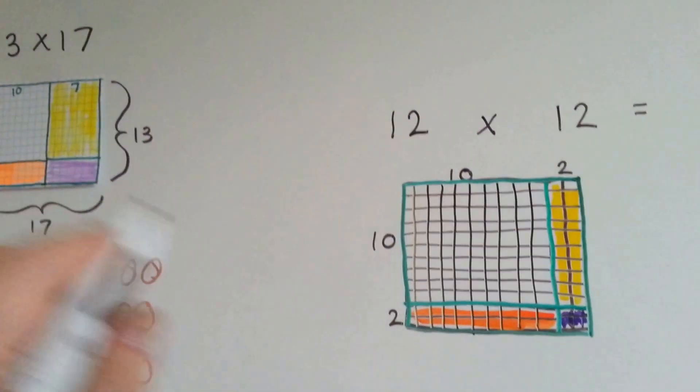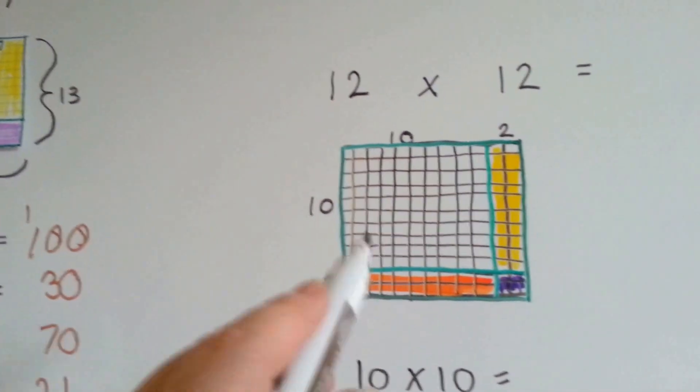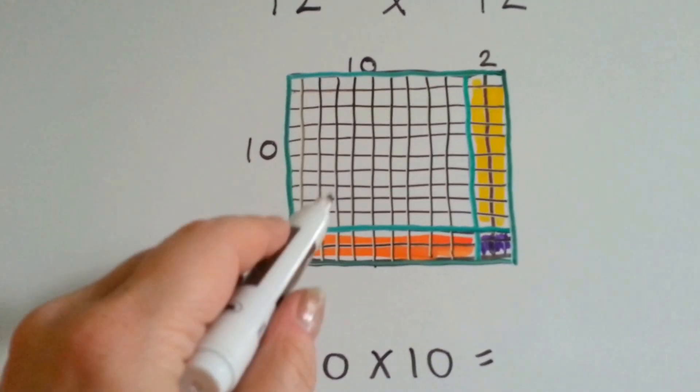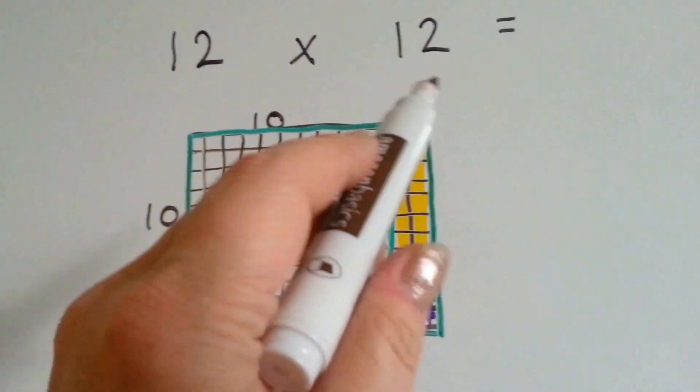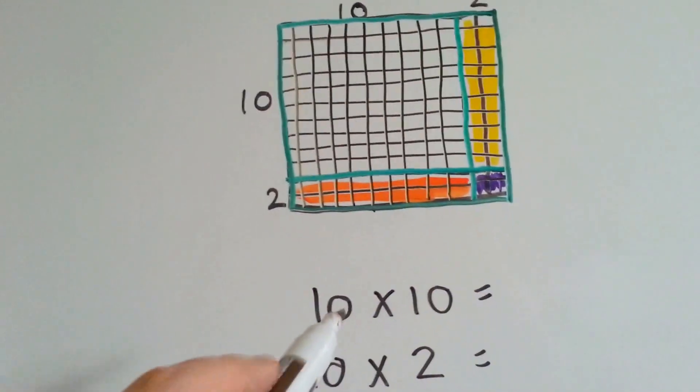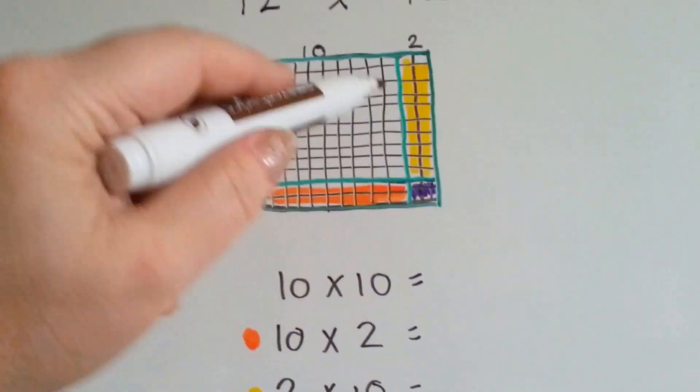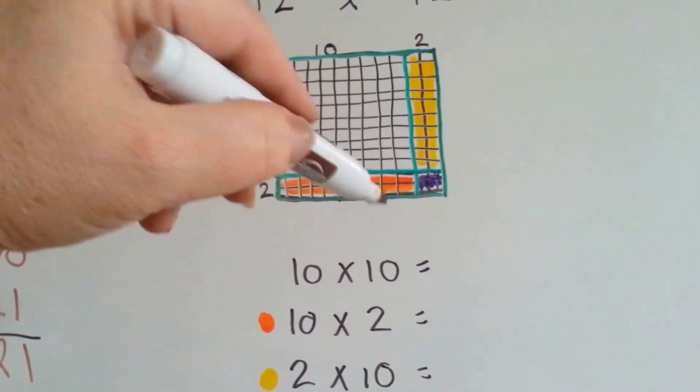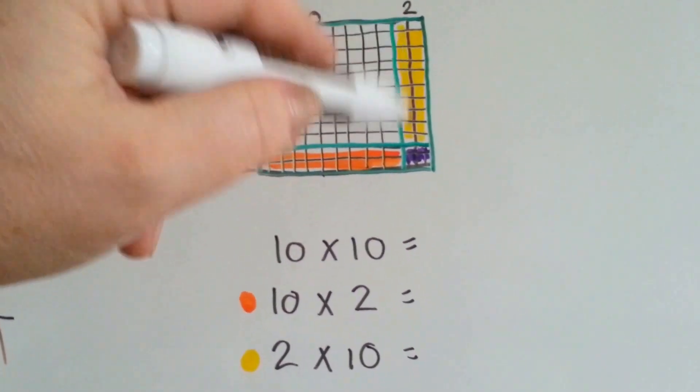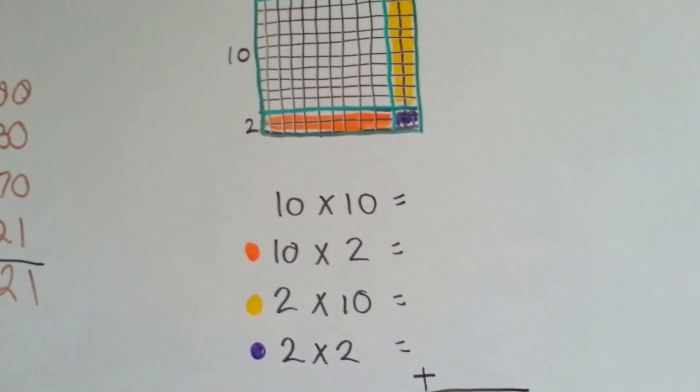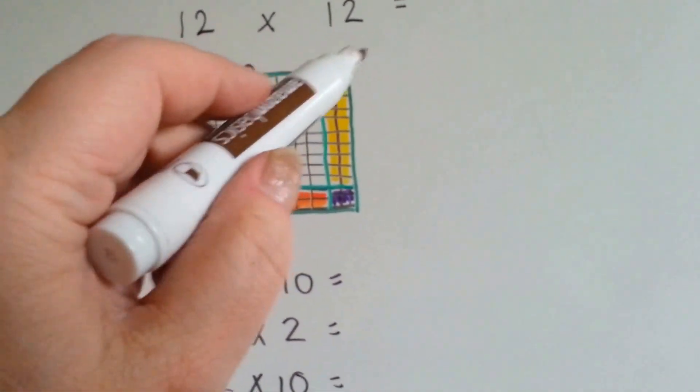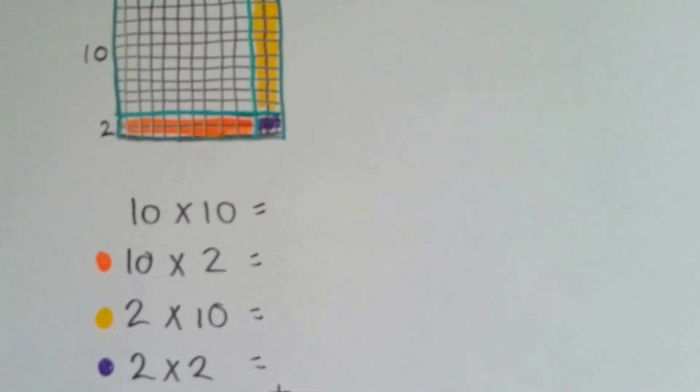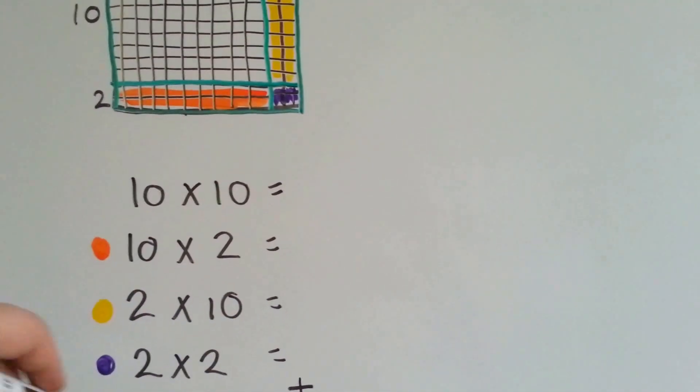Now this one I made by hand. I didn't want to use graph paper to show you that you don't need the graph paper. The squares don't have to be perfect. They just have to be there. So, now we've got 12 times 12. So, we've got our 10 times 10. We've got a 10 times 2, which is the orange one here. We've got a 2 times 10, which is the yellow one here. And we've got a 2 times 2, which is the purple one. And all together that makes 12 times 12. There's 12 this way and 12 that way. So, it's all broken up into the tens and ones.